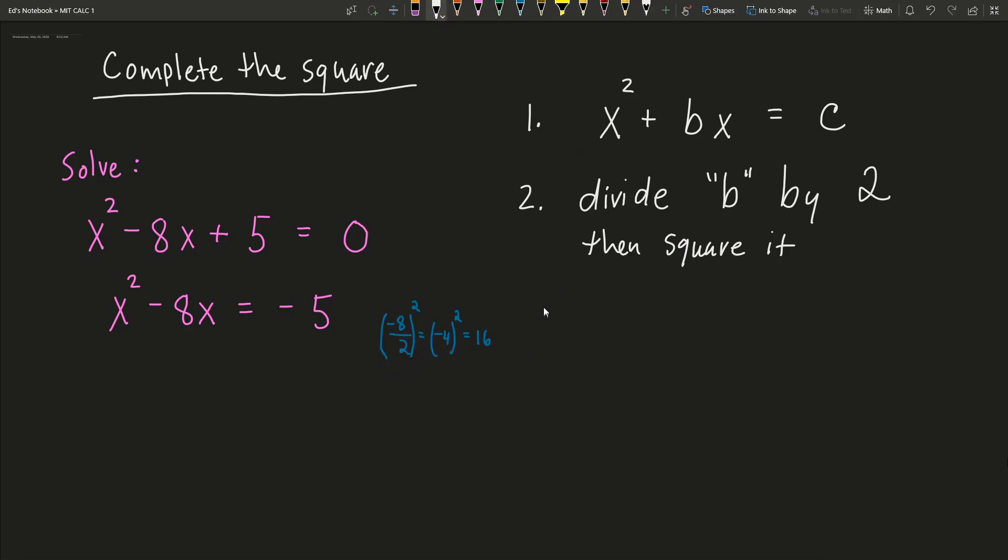So I'm going to now add that to both sides of the equation. Add this value to both sides of the equation. So what is the value I'm adding to both sides? It's that b value that I divided by 2 and squared, which is 16.